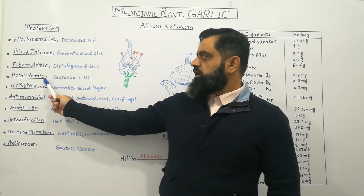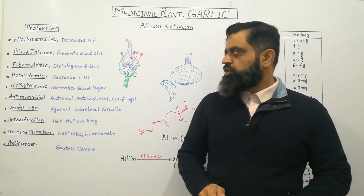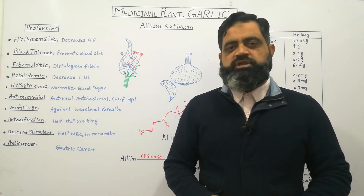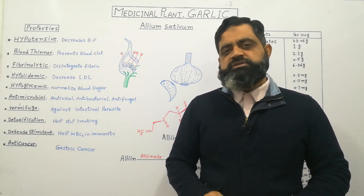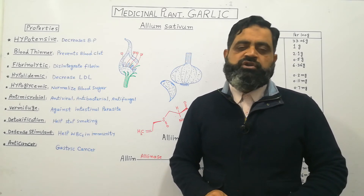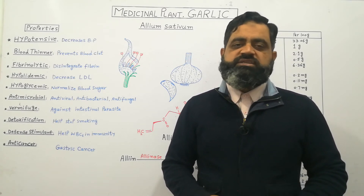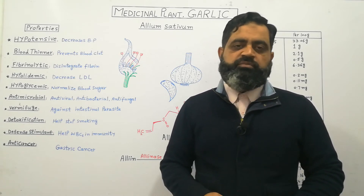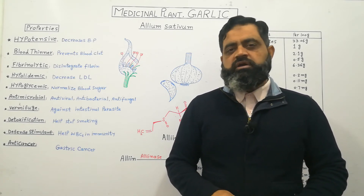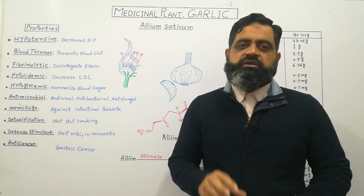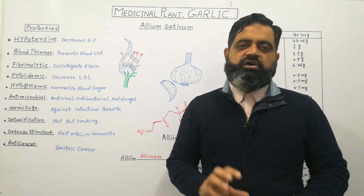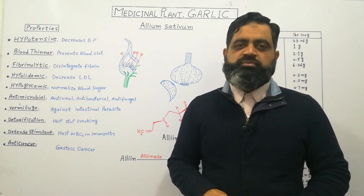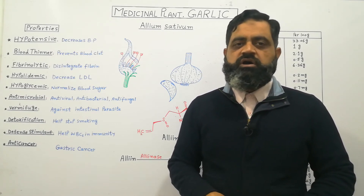Garlic also has a property of being hypolipidemic — meaning it reduces cholesterol inside the blood. It reduces LDL, low-density lipoprotein, which is the noxious cholesterol that is the cause of many heart problems and arterial diseases. Regular intake of raw garlic can reduce bad cholesterol from your body and help you prevent cardiovascular diseases.